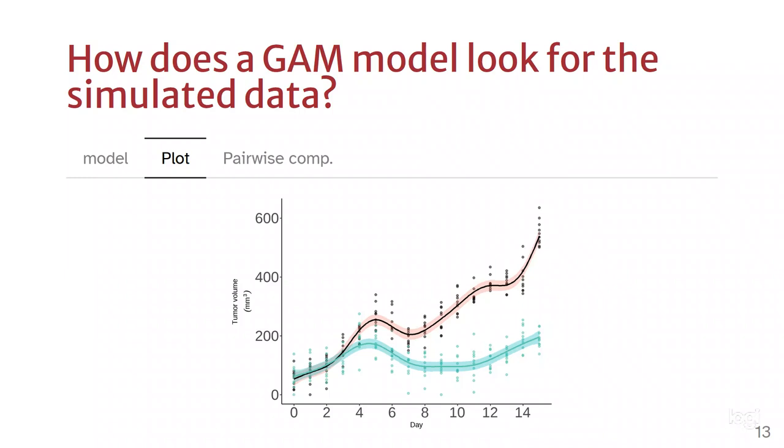Now, for GAMs, there is no p-value-based post-hoc comparisons as it is for repeated measures ANOVA, but we can still do pairwise comparisons.